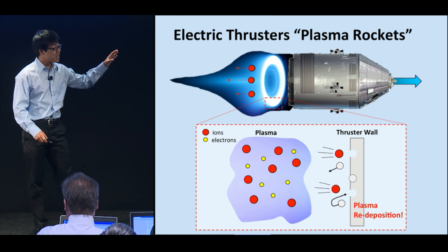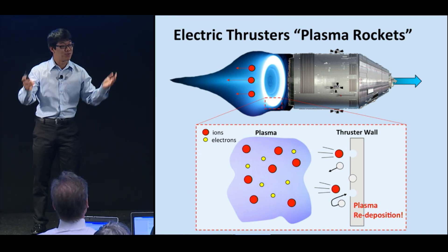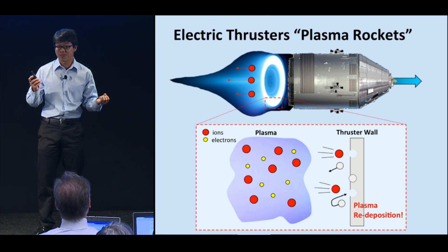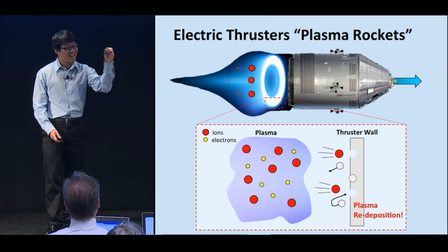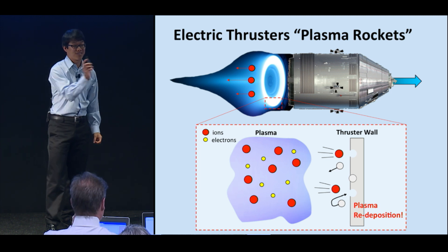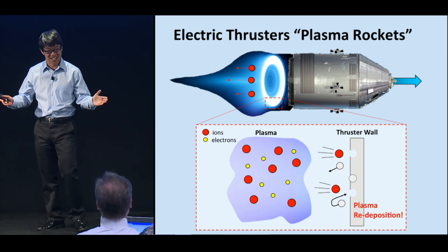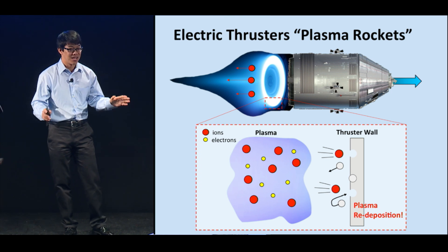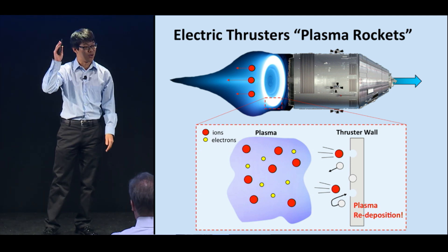The thruster creates a plasma, which is a soup of positive particles called ions and negative particles called electrons. These ions are shot out the back of the thruster, pushing your spacecraft forward. Simple enough, right? But what happens when this plasma gets close to the walls of the thruster?